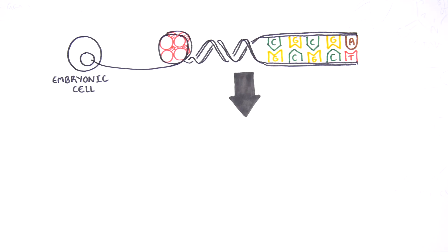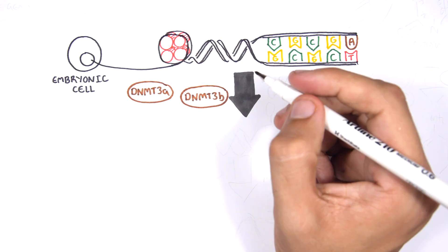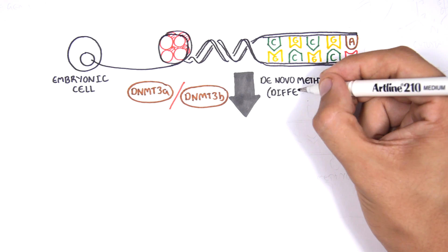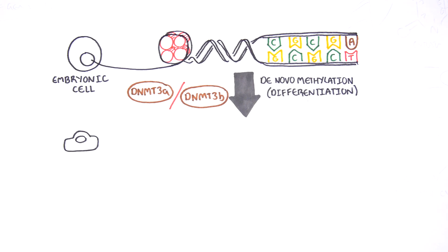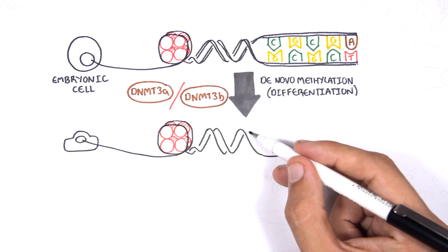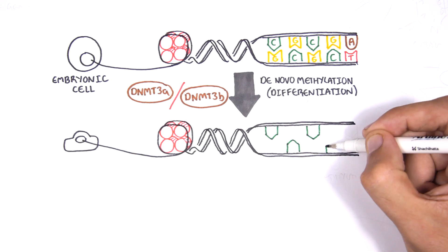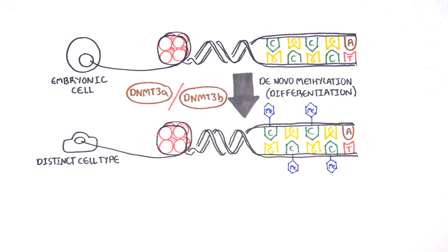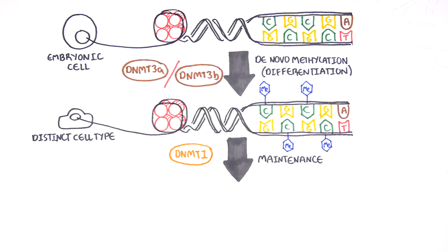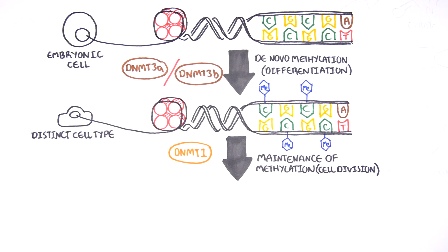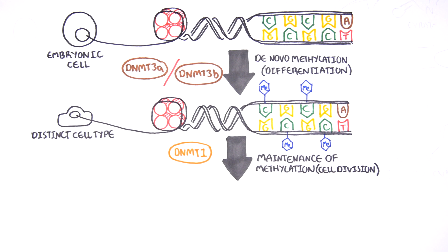Following fertilization, DNMT3A and DNMT3B are responsible for de novo methylation, allowing embryonic cells to differentiate into a cell type. So for example, this embryonic cell has become a distinct cell type, a skin cell. DNMT1 is responsible for the maintenance of DNA methylation following differentiation and is active during cell division thereafter.